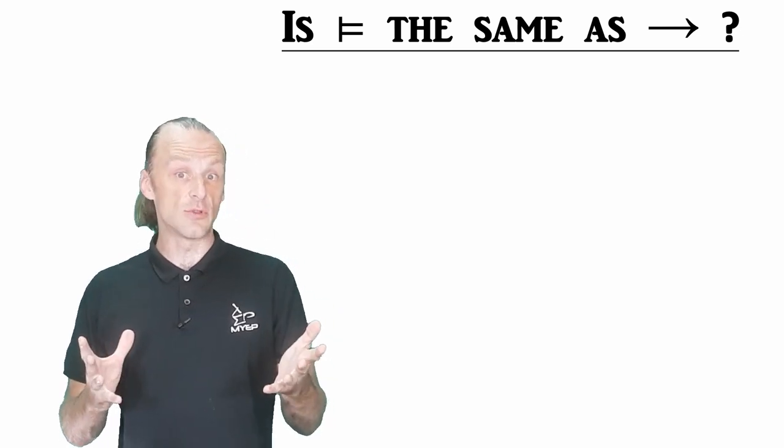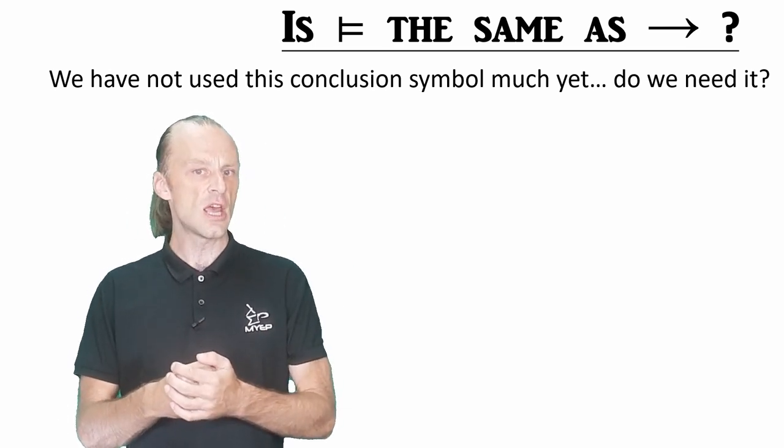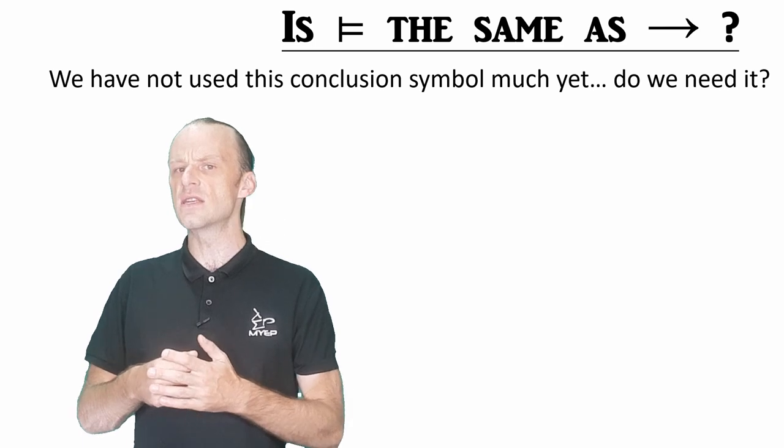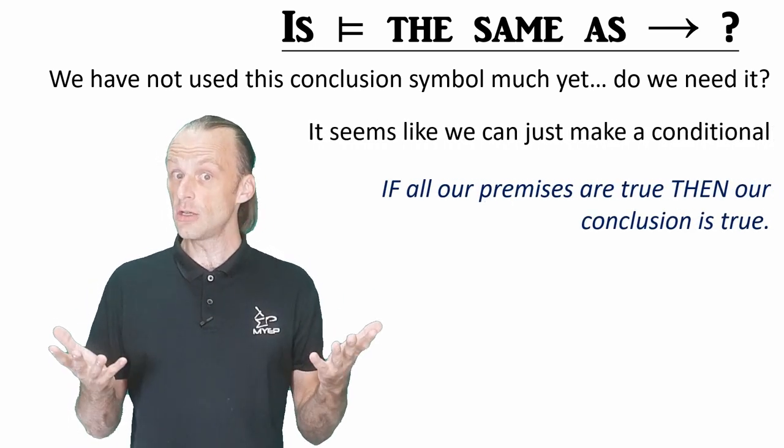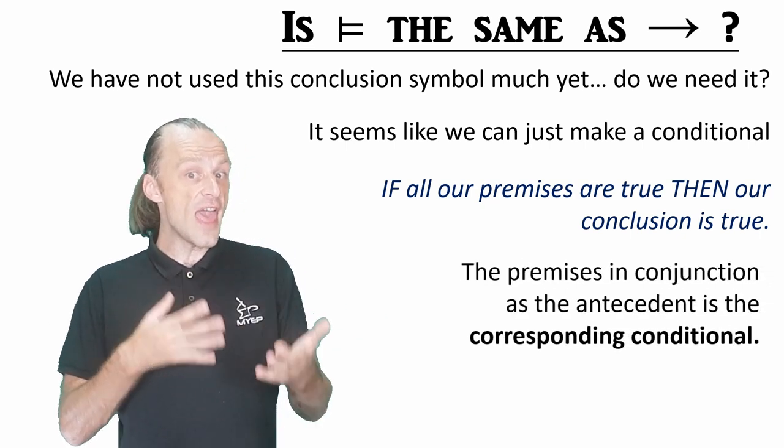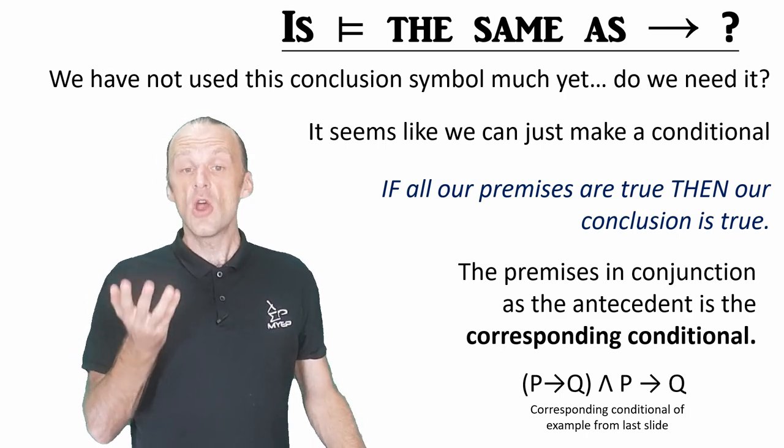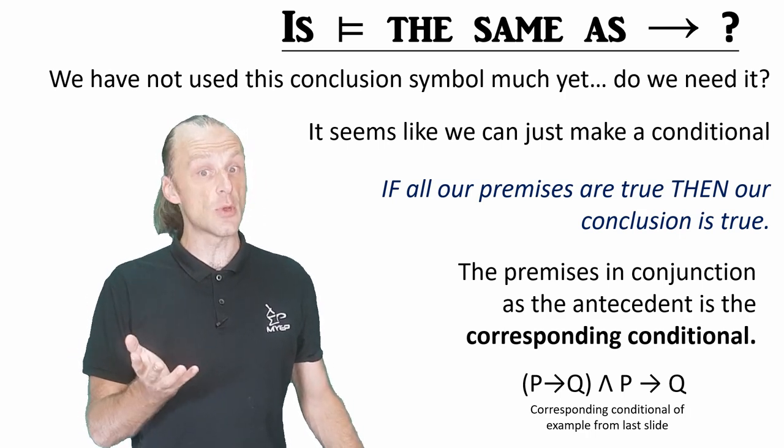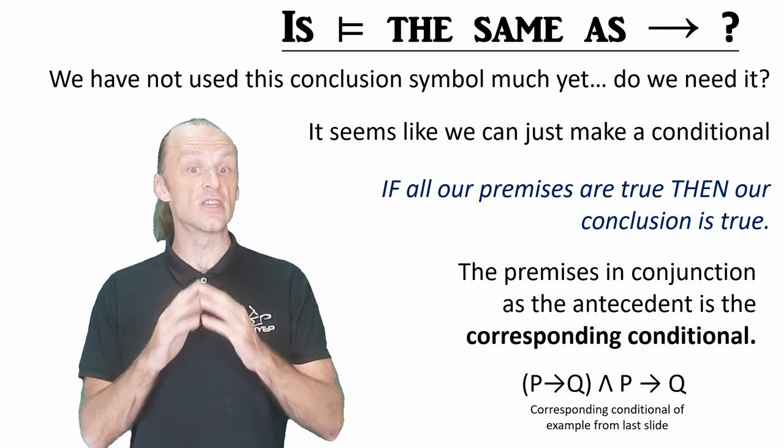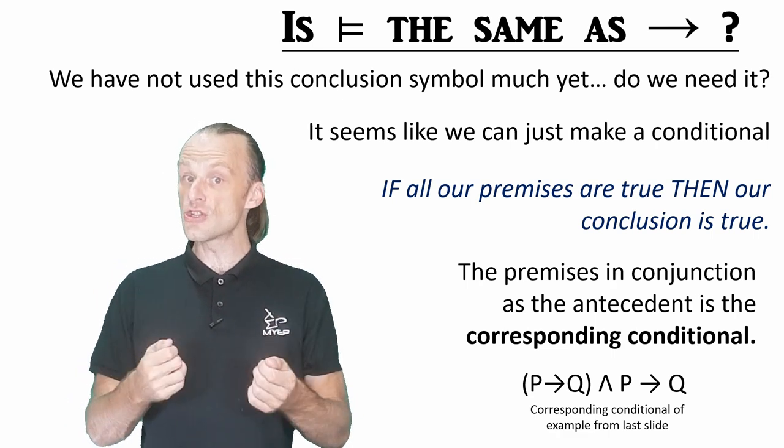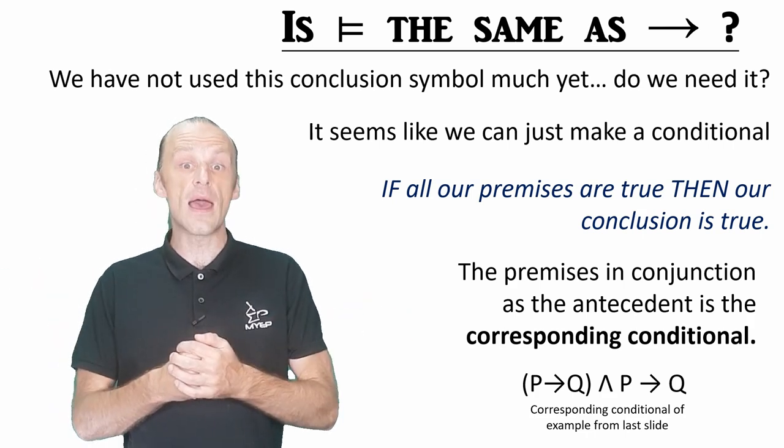As I said, we introduced the double turnstile, we said it meant therefore and is used for the conclusion to an argument, but then we didn't really use it. You might wonder if we actually need it. Couldn't we just use the conditional? If all of our premises are true, then the conclusion is true. The answer to that is yes, kind of. We even call this the corresponding conditional of our argument. Take all of your premises and put them in conjunction as the antecedent, and then your conclusion as the consequent of a conditional, and this is similar to our argument.